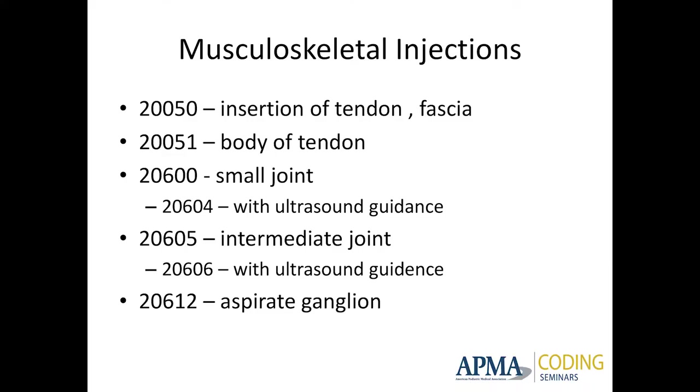Musculoskeletal injections — note that the codes on the slide are reversed: 5-0 is the body of the tendon and 5-1 is the insertion — I apologize for that. So code 20550 is your injection for plantar fascia. I see a lot of people try to bill plantar fascia injections as 20600, but there's no joint there. Really, 20550 is the best code for a plantar fascial injection, whether it's at the insertion or if you're injecting a plantar fibroma. 20551 is insertion.